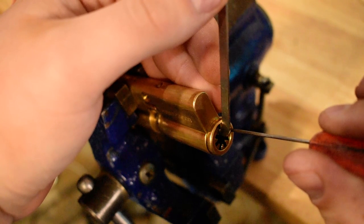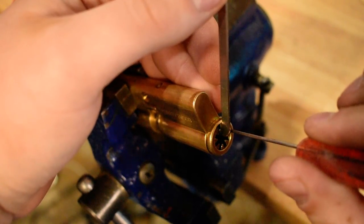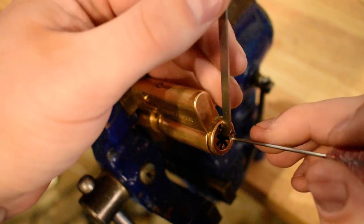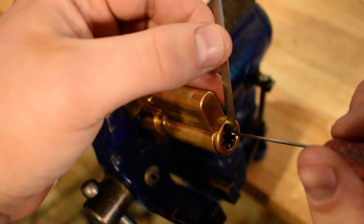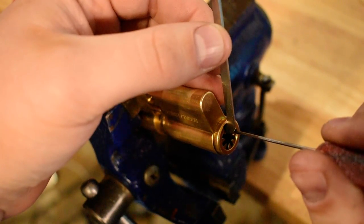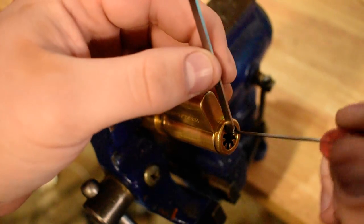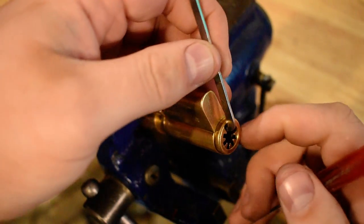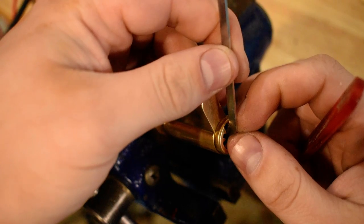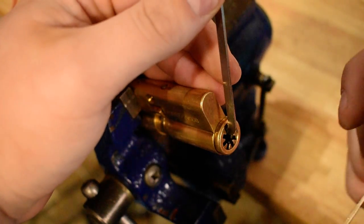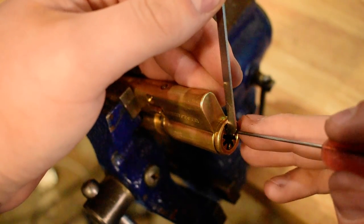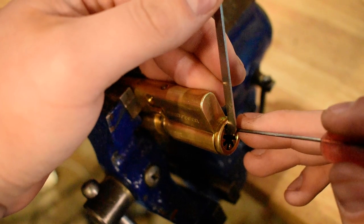So first click, second click, and that's bottomed out. First click, second click, so there's two shear lines in it. I don't think you can even take a shear line out and have the lock still work, but just in case people are questioning it.